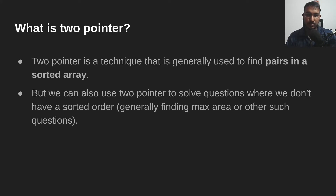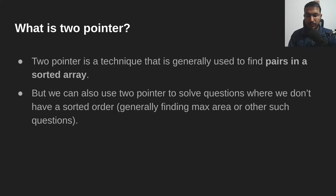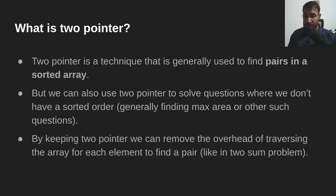When the array is not sorted, getting to the two pointer thinking is generally a bit harder because you need practice and some experience. As you solve more questions where the array is not sorted, you start getting familiar with where two pointers can be applied. For example, there are questions where you have to find a maximum area — given two walls or something, you have to find the area between them — and there we can use two pointers to remove overhead.